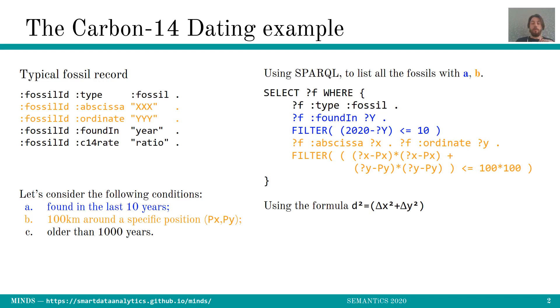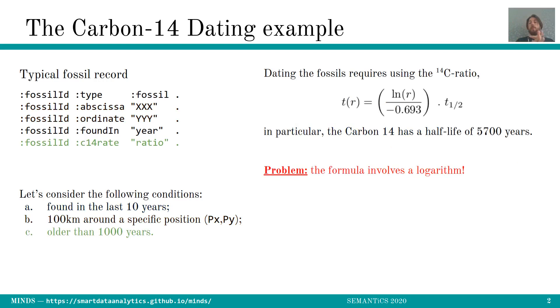But the real complicated conditions come with the older than 1000 years. To do so we need to have a look at the c14 ratio. The dating of the fossil requires to compute the following formula which is a log divided by a certain value, time and the half time. And the problem is that this formula involves logarithms and it's impossible by the standard to compute logarithms in SPARQL.